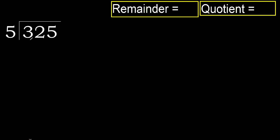325 divided by 5. 3 is less than 5, therefore move to the next digit. 32 is not less than 5, therefore we work with 32.